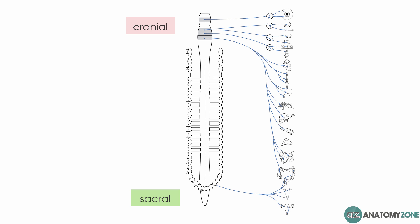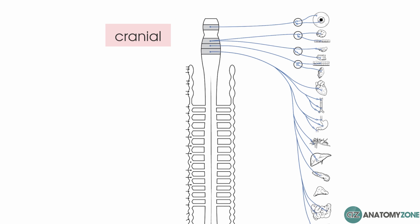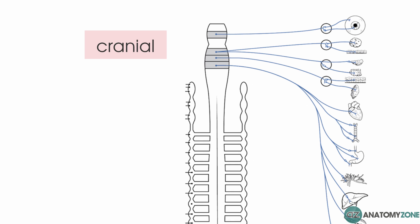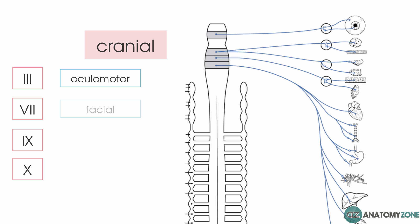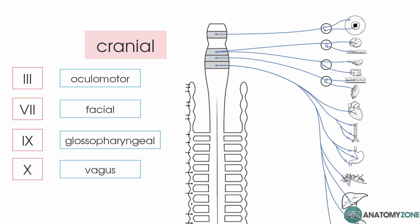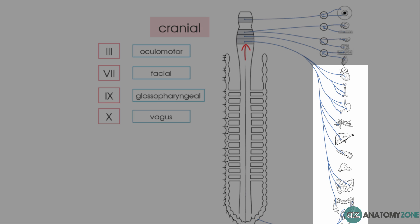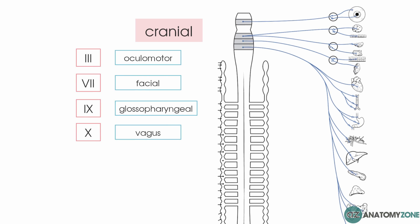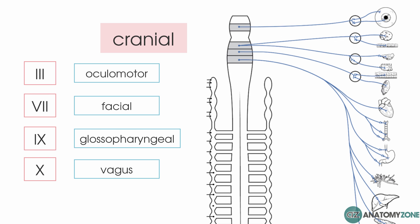Looking at the top of this diagram, the cranial outflow of the parasympathetic component is found within nerves 3, 7, 9 and 10 — the oculomotor, facial, glossopharyngeal and vagus nerve. The vagus nerve has a wide distribution to several thoracic and abdominal viscera and makes up the largest component of the parasympathetic division.